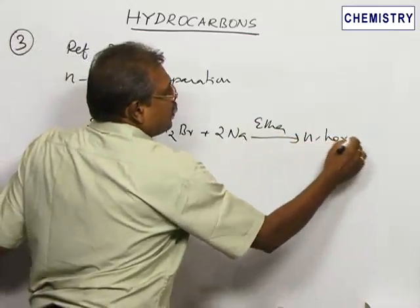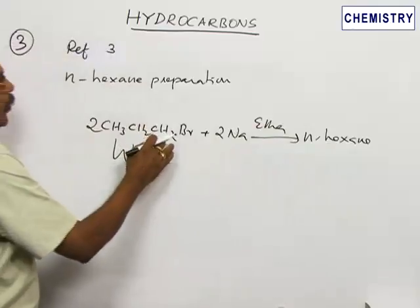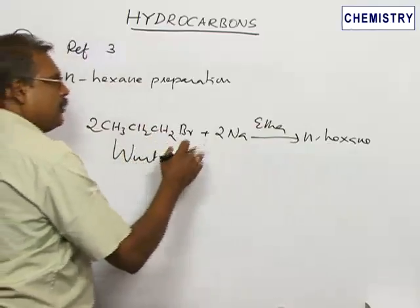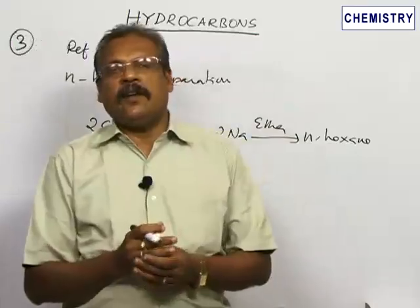N-hexane is better prepared from 1-bromopropane by Wurtz reaction. This is given by option 1. Better select option 1.